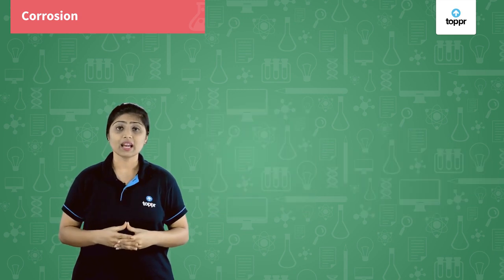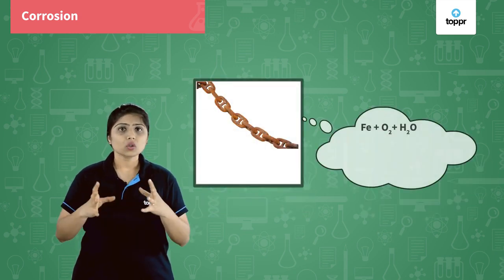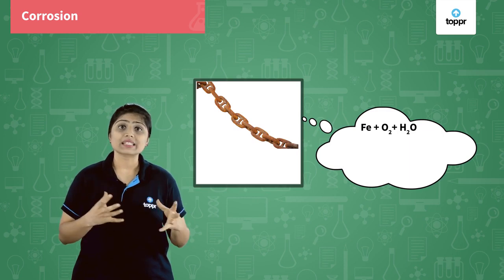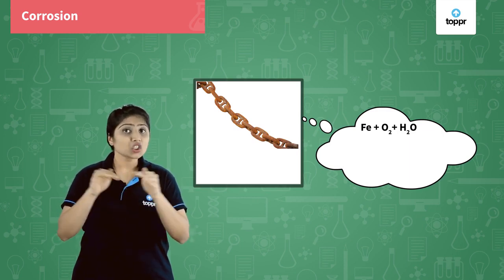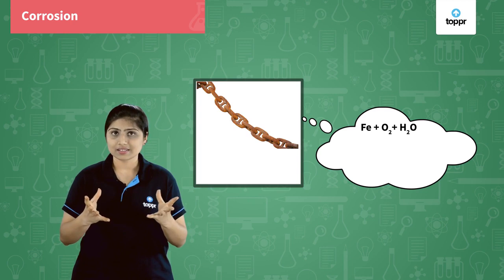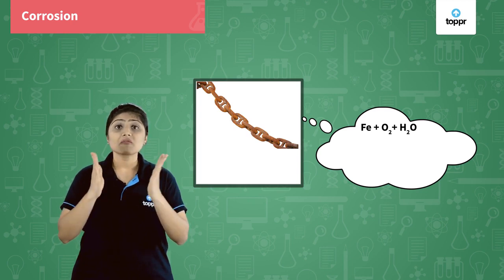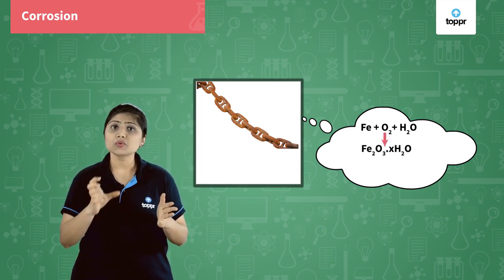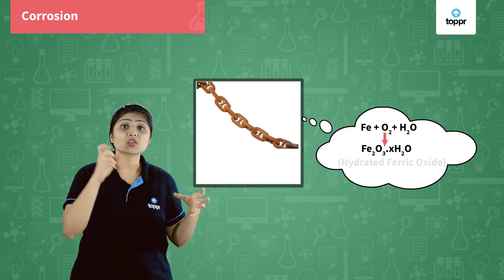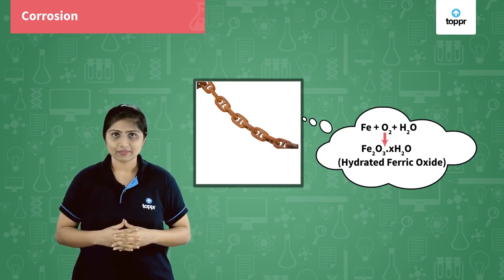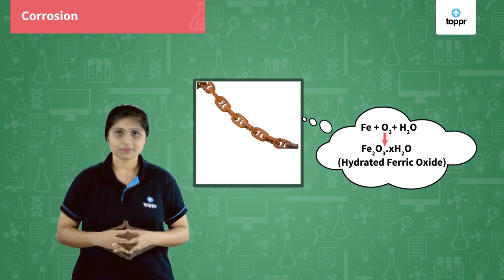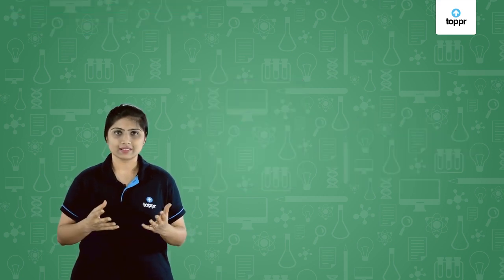Similarly, we have iron. Iron corrodes very easily because of oxygen and moisture present in air, and it forms a reddish brown colored layer on it called rust, which is ferric oxide Fe₂O₃·xH₂O. This is called hydrated ferric oxide, where x indicates a variable. Iron corrodes very easily.